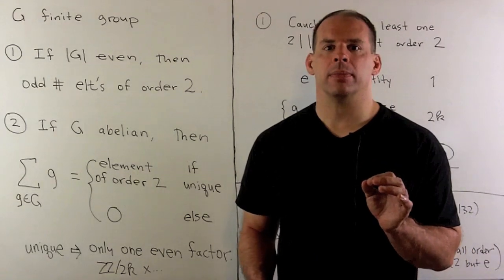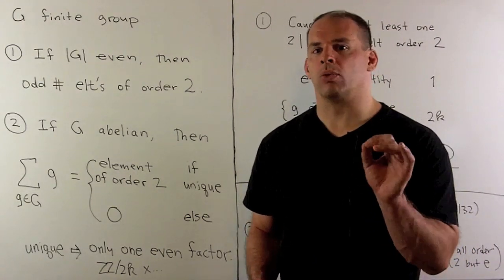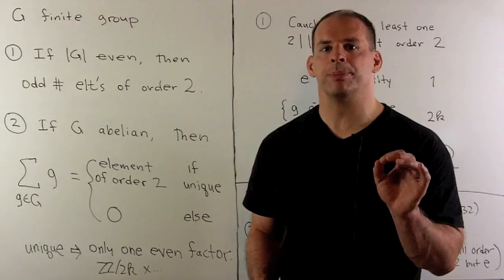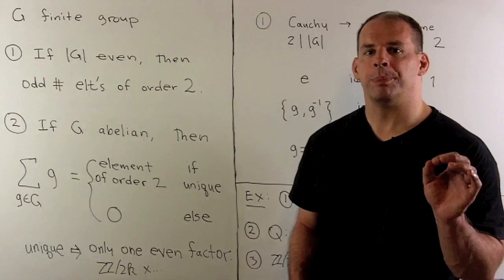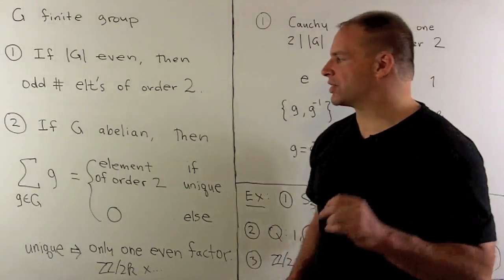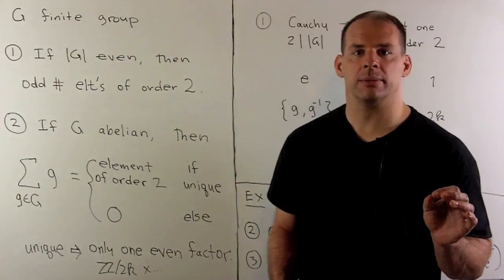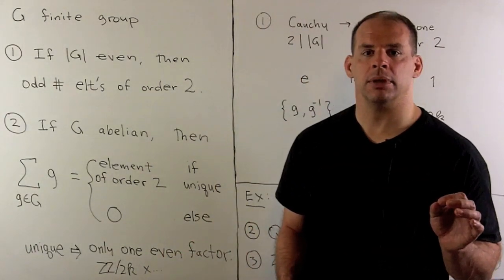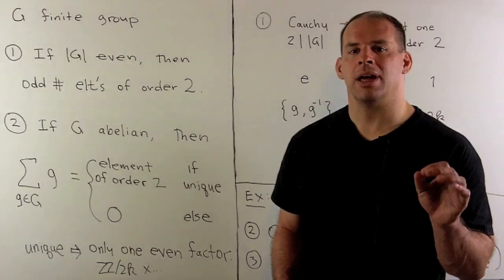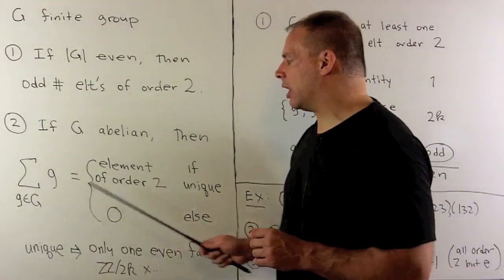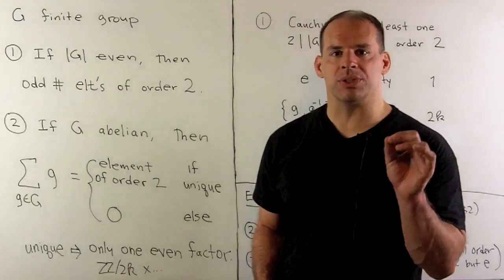Second problem: G is abelian. Here we'll write the group multiplication as addition. We want to show that if we take the sum over all elements of the group, there are two possibilities. If there's a unique element of order 2, then our sum is going to be equal to that element. Otherwise, the sum is equal to 0.